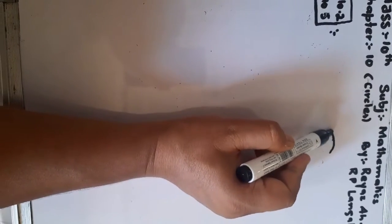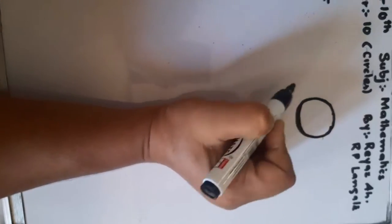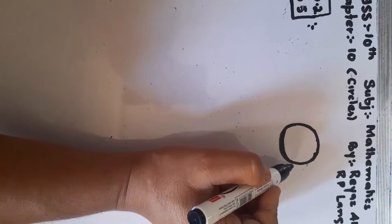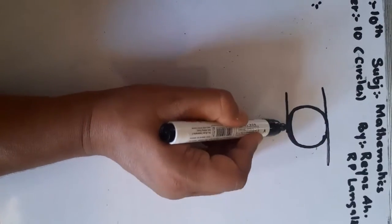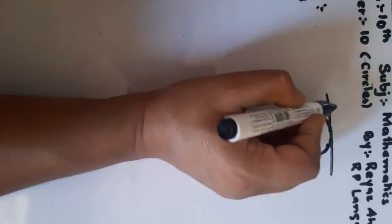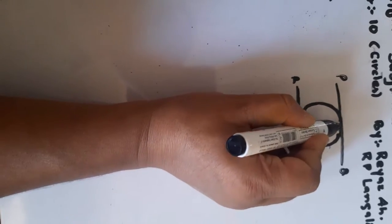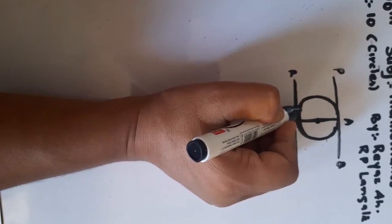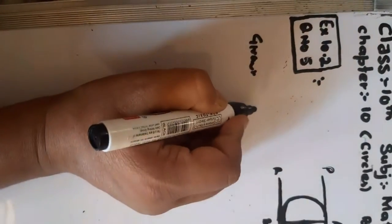Here we have a circle with two parallel tangents. The segment joins the points of contact of the two parallel tangents. PQ and RS are two parallel tangents, with points of contact A and B. We need to prove that the segment AB passes through the center of the circle.